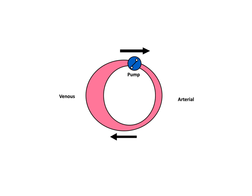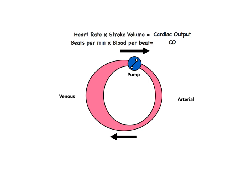Our cardiovascular system is essentially designed as a pump between the venous and arterial side. We think of the product of this pump as the cardiac output. Mathematically speaking, we calculate this value as the product of the heart rate and the stroke volume, or the amount of blood per beat. This is usually described in liters per minute.